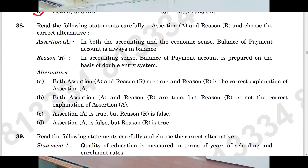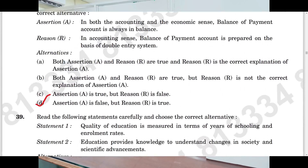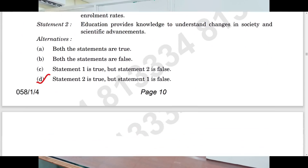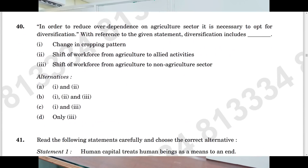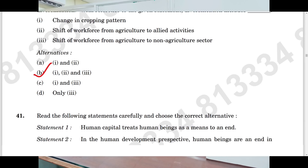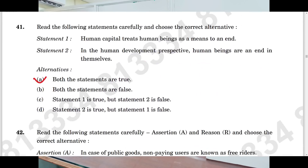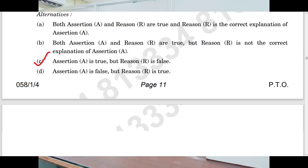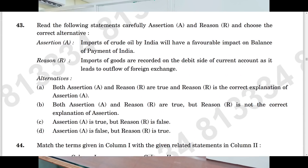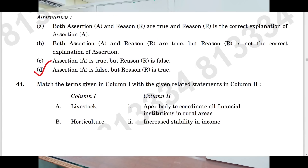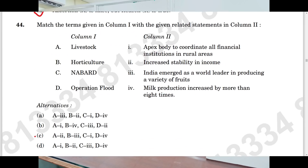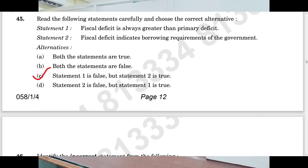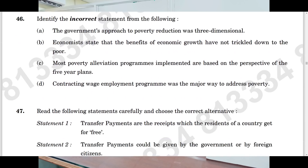Question number thirty-eight is on the screen and the answer is D. Question number thirty-nine: D. Question number forty: B. Question number forty-one: A. Question number forty-two: C. Question number forty-three: D. Question number forty-four: C. Question number forty-five: C. Question number forty-six: D.